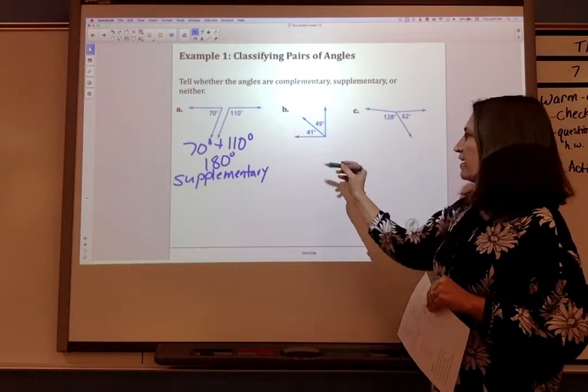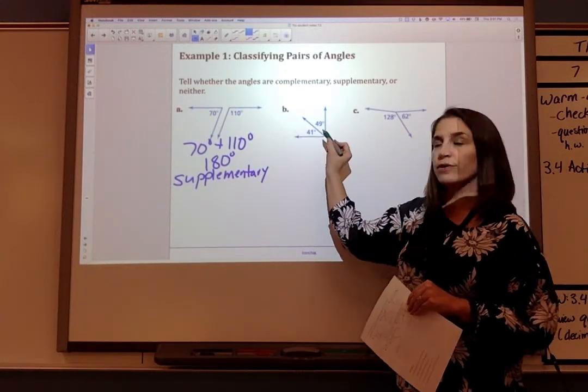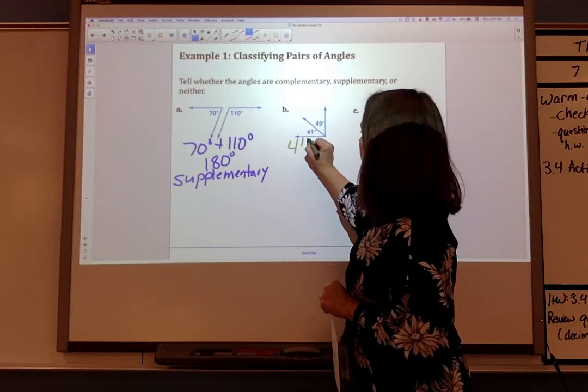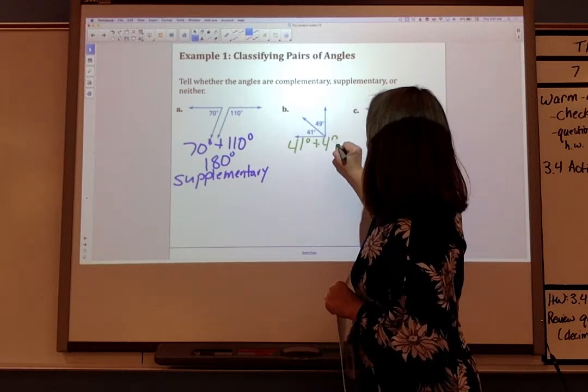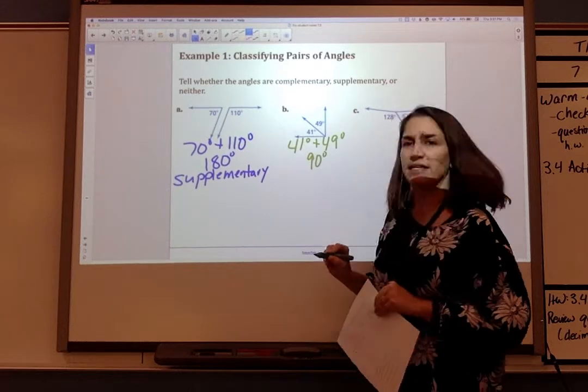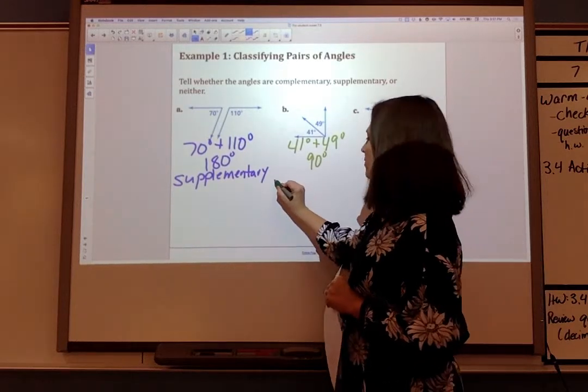My second set of angles are 41 degrees and 49 degrees. So 41 plus 49 is 90 degrees. That means those two angles are complementary.